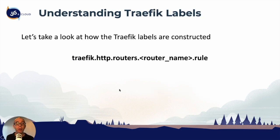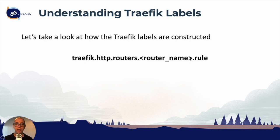Before we really jump into routers, we need to understand how labels work, because we're going to start using labels to define the routers on the container. To really understand how that works, we need to see how the label is constructed. Here is a typical standard label: traefik, HTTP, routers, router name — this is user defined — and the rule.